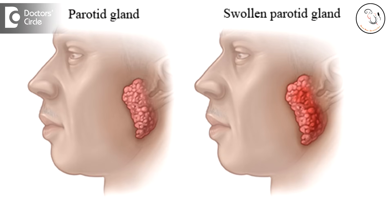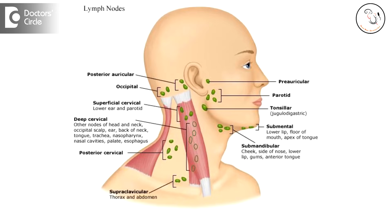Generally if a patient comes to us with a painful swelling behind the ear, one of the common things we look for is whether it is a parotid gland swelling, because part of the parotid gland goes behind the ear as well. It can swell up and cover the groove behind the ear called the post-auricular groove. Another common cause is a salivary gland infection, or swelling of the lymph nodes in that area — the post-auricular group of lymph nodes.